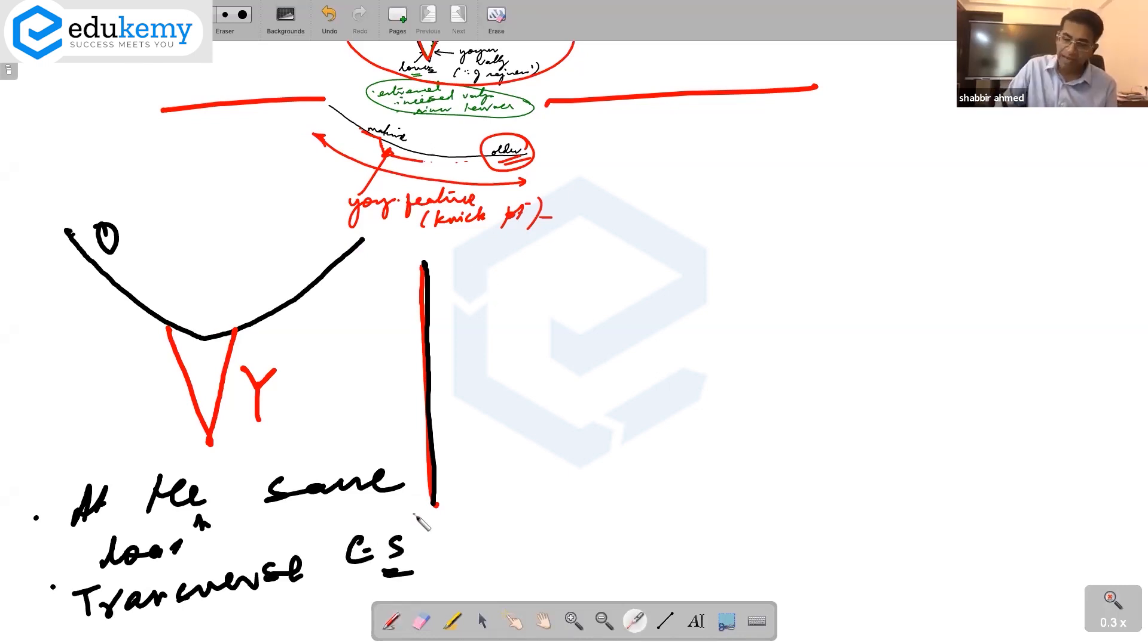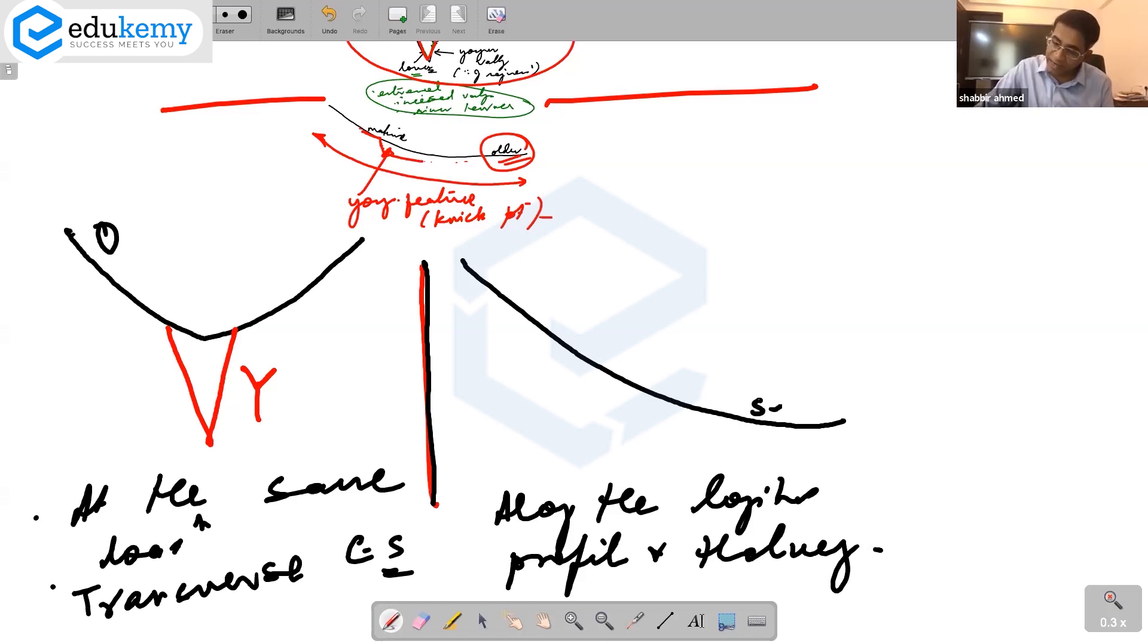This is at the same location and we are comparing the transverse cross-section. Then, I am saying, you compare this along the thalweg. This is along the longitudinal profile and the thalweg. This is senile, this had to be mature.